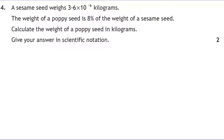Question four is a scientific notation question. A sesame seed weighs 3.6 × 10⁻⁶ kg, and the weight of a poppy seed is 8% of that. So we're looking for 8% of 3.6 × 10⁻⁶, which we write as 0.08 times 3.6 × 10⁻⁶.